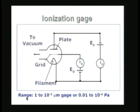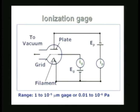For higher vacuum, I use an ionization gauge. The ionization gauge consists of an evacuated glass envelope containing three electrodes: a plate, a grid in the form of a perforated sheet or cylinder, and a hot filament which is the cathode. The filament is indirectly heated to a high temperature — it will glow like a filament in a bulb. This is a hot cathode type, which gives out electrons by thermionic emission.